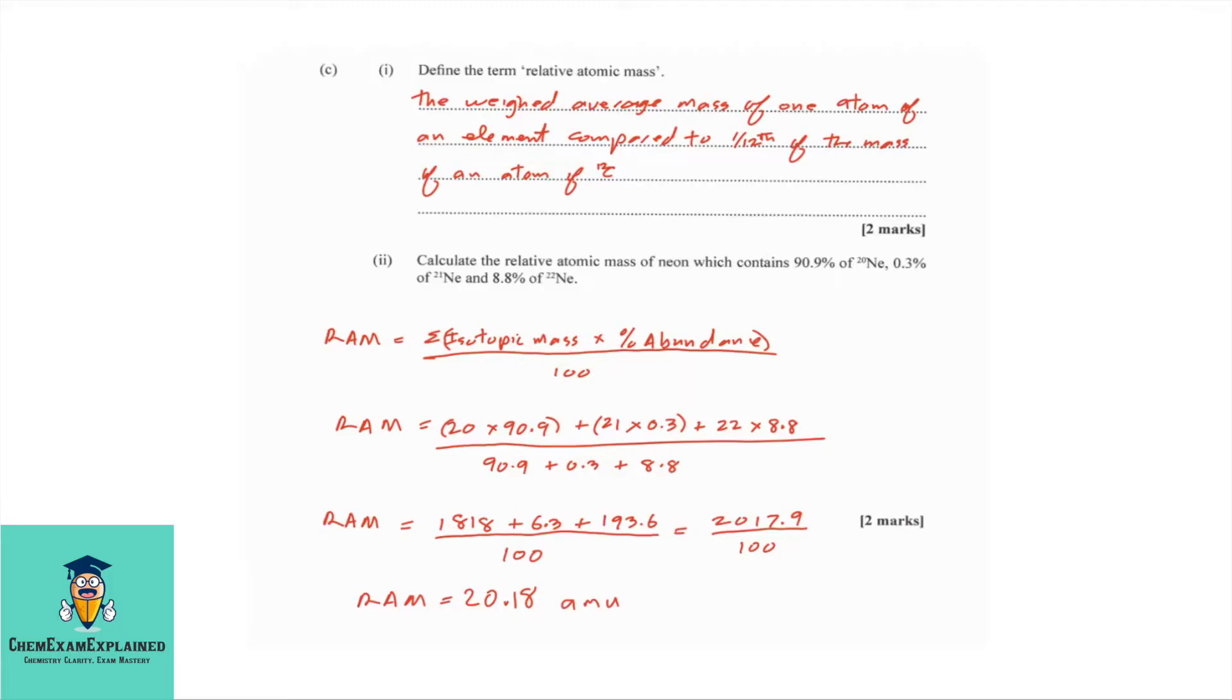Part 2. Calculate the relative atomic mass of neon, which contains 90.9% of neon-20, 0.3% of neon-21, and 8.8% of neon-22. The simple formula is relative atomic mass is equal to the sum of the isotopic masses times the percentage abundance divided by 100. You look at each isotope, you will multiply the mass or the isotopic mass of that element times the abundance, and you'll then do the same thing for the other isotopes, divided by the total percentage, which is 100.